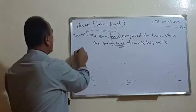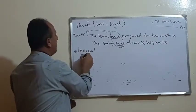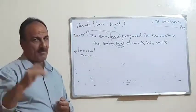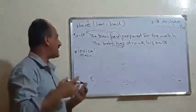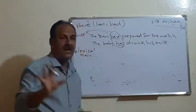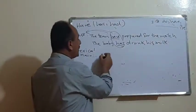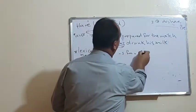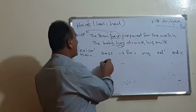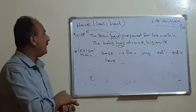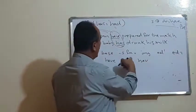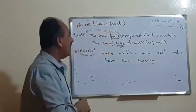'Have' can also be used as a lexical or main verb, used alone to express possession. As a lexical verb, it has five forms of conjugation: a base form, an S-form, an -ing form, a past (ed1), and a past participle (ed2). The base is 'have,' the S-form is 'has,' and the -ing form is 'having' — because it ends in E, we drop the E and add -ing.